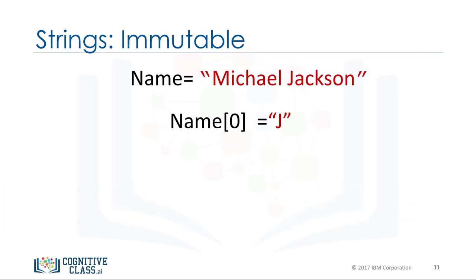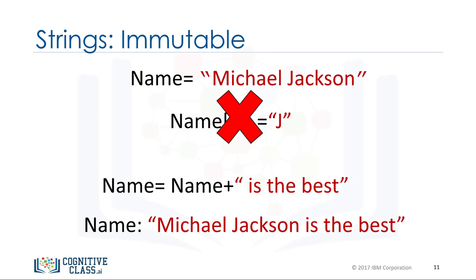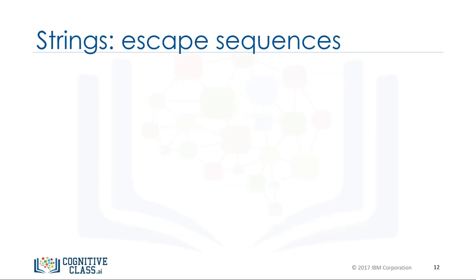Strings are immutable. This means you cannot change the value of the string, but you can create a new string. For example, you can create a new string by setting it to the original variable concatenated with a new string. The result is a new string that changes from 'Michael Jackson' to 'Michael Jackson is the best.'